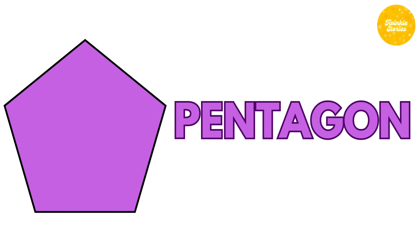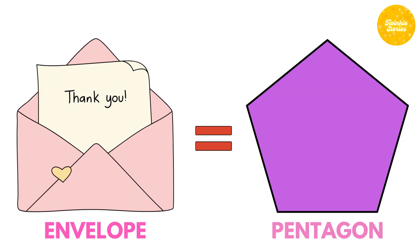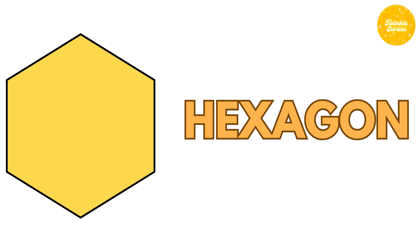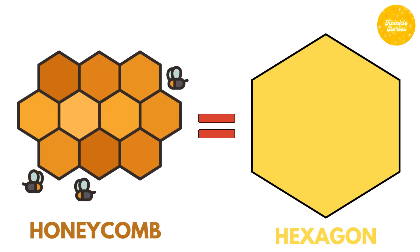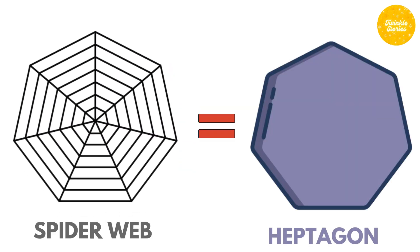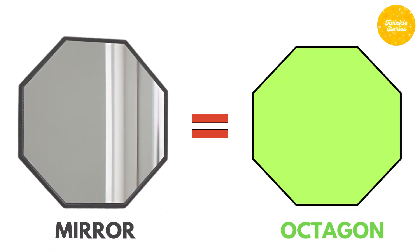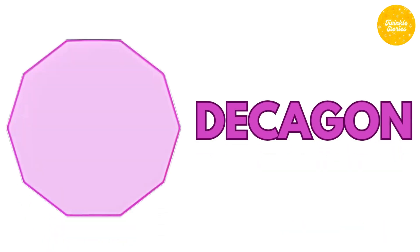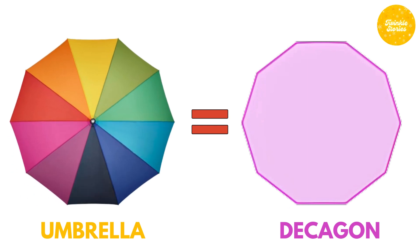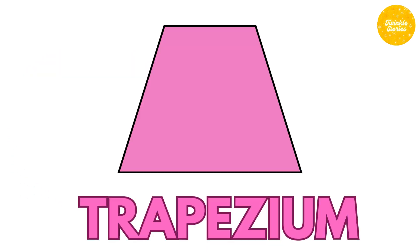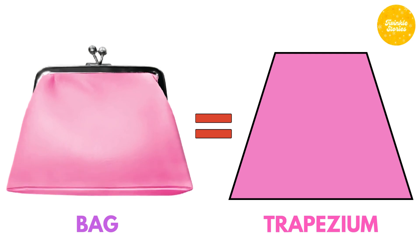Pentagon — envelope is the example of pentagon. Hexagon — honeycomb is the example of hexagon. Heptagon — spider web is the example of heptagon. Octagon — mirror is the example of octagon. Decagon — umbrella is the example of decagon. Trapezium — bag is the example of trapezium.